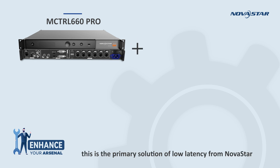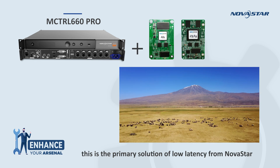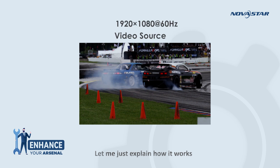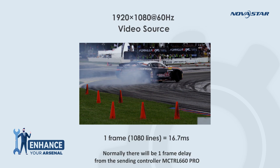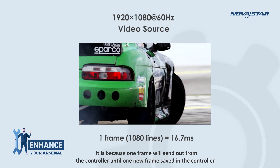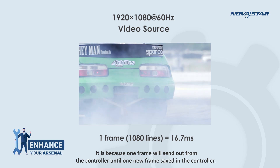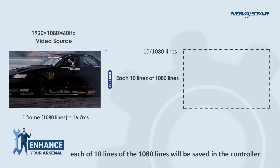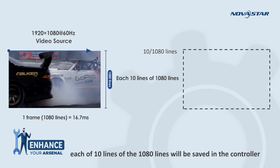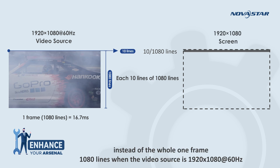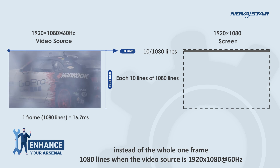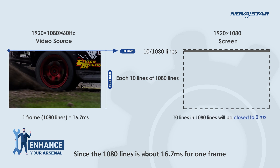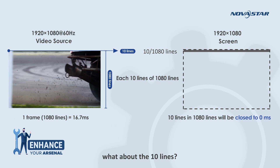As you can see from the picture, this is a primary solution of low latency from Novastar. The MCTR660 Pro works with an AES receiving card. Normally, there will be one frame delay from the sending controller MCTR660 Pro, because one frame will be sent out from the controller only after one new frame is saved in it. When you enable the low latency function, each 10 lines of the 1080 lines will be saved in the controller instead of the whole 1080-line frame. When the video source is 1920 by 1080 at 60Hz, since 1080 lines is about 16.7 milliseconds for one frame, saving only 10 lines reduces the delay to close to zero.